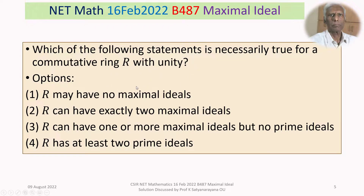The question is about whether the ring R admits maximal ideals or no maximal ideals, can admit exactly two maximal ideals, and so on. The problem concerns the concepts of maximal ideals and prime ideals of a commutative ring R with unity.